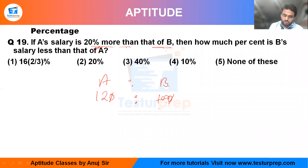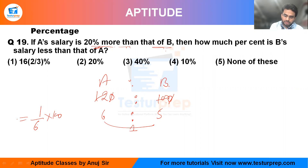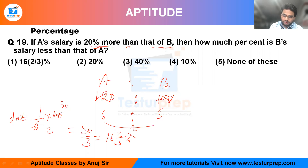Now, how much percent is B's salary less than that of A? It is 1 less than 6, so the calculation is 1 over 6, multiplied by 100. The total decrement equals 50 divided by 3, which is 16 and 2 by 3 percent. That is option number 5.